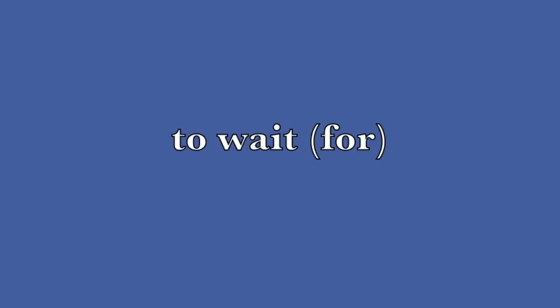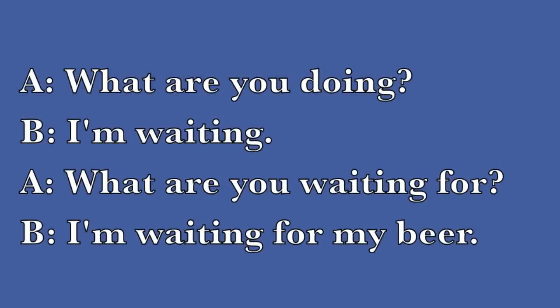Another important thing to remember is that just because you put a preposition after a verb, that doesn't necessarily make it a phrasal verb. Sometimes you just need to put a preposition after a verb if you want to associate it with a noun. Let's look at the example of to wait for. Wait still has the same meaning — you just need to use 'for' if you want to specify why you're waiting. For example: 'What are you doing?' 'I'm waiting.' 'What are you waiting for?' 'I'm waiting for my beer.' Here we are associating wait with the noun beer.